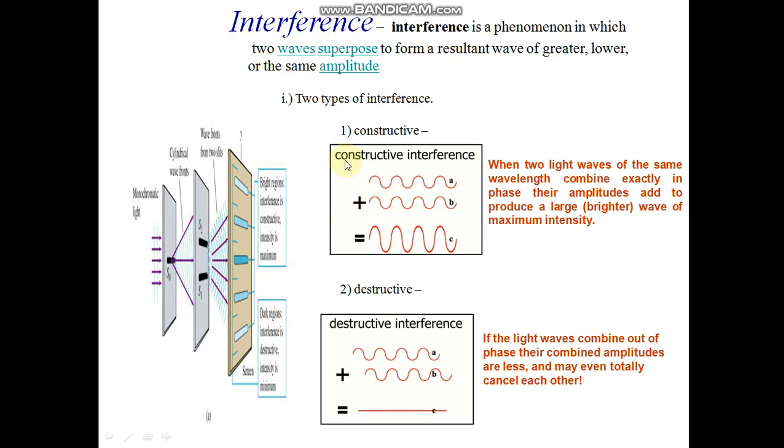Interference: Interference is a phenomenon in which two waves superpose to form a resultant wave of greater, lower, or same amplitude. Two types of interference.